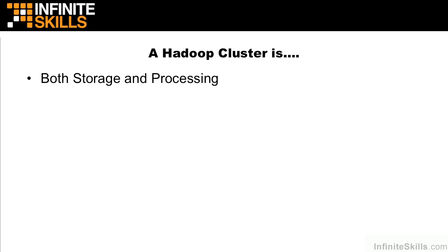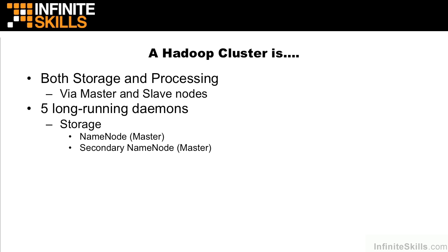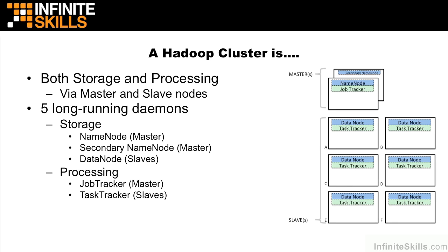A Hadoop cluster involves both storage and processing via master and slave nodes, and five long-running daemons. On the storage side: the name node, which is a master daemon; the secondary name node, also a master daemon; and the data node, which exists one per slave. On the processing side: the job tracker, which is the master daemon, and task trackers, which are the slaves. Every time you see this diagram, just remember the blue parts are HDFS and the green parts are MapReduce.